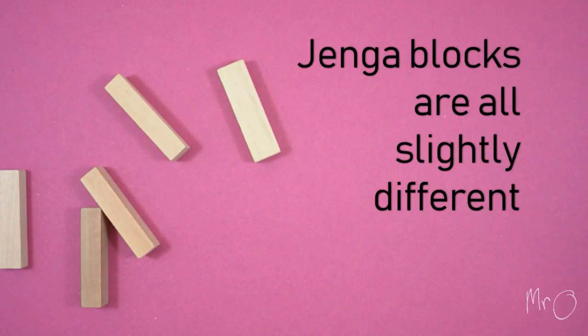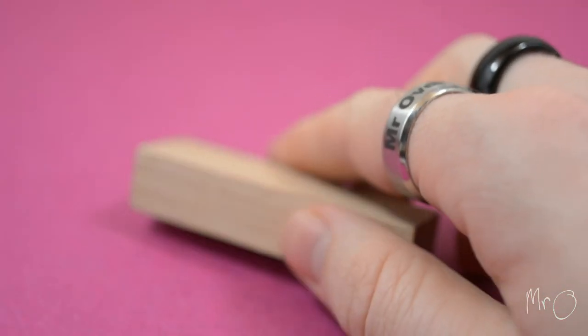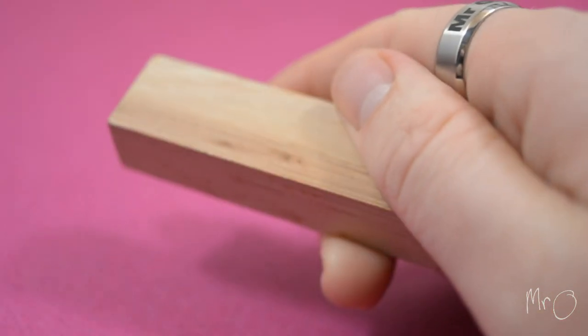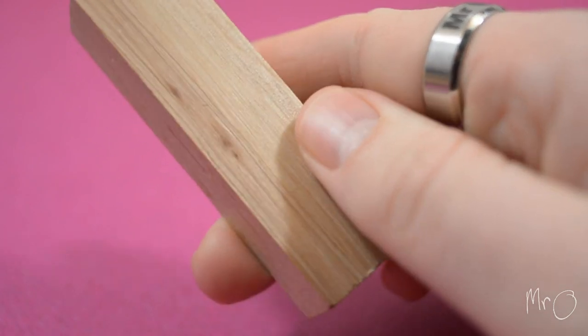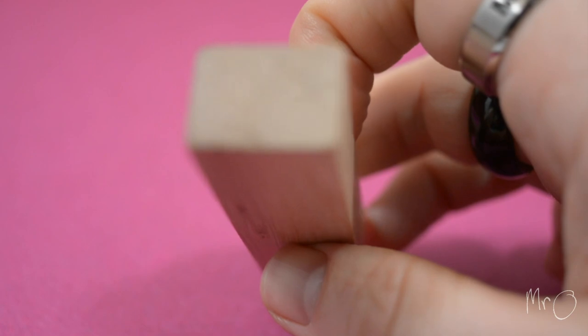Five: All Jenga pieces are slightly different, which is why some blocks are easier to remove than others. This is also why plastic versions aren't very fun, because the blocks are all exactly the same.